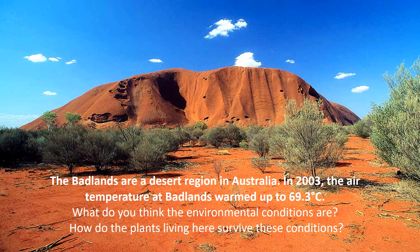Some of you might recognise this picture — this is a picture of the Badlands, which is a desert region in Australia. In 2003, which was a record year, the Badlands actually got to temperatures of 69.3 degrees Celsius — so ridiculously hot. What do you think the environmental conditions are? How do the plants living here survive these conditions? Pause the video and have a think — you don't need to write any of them down.